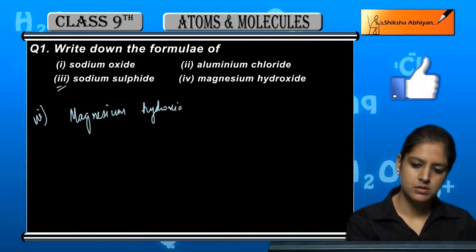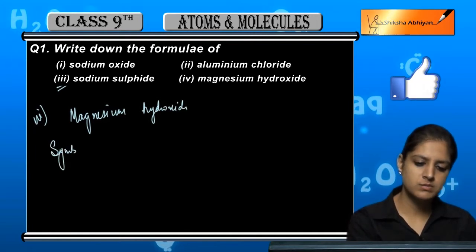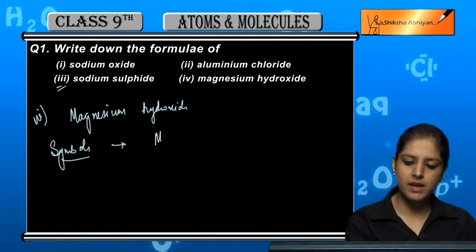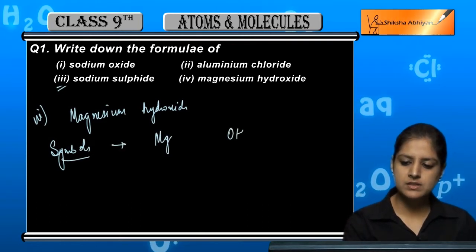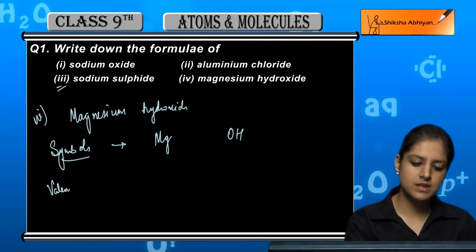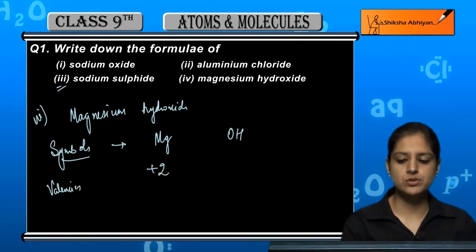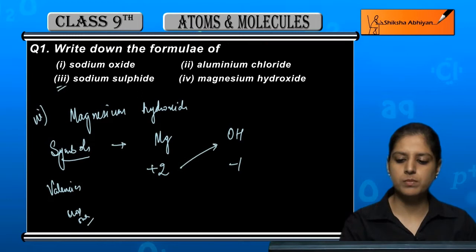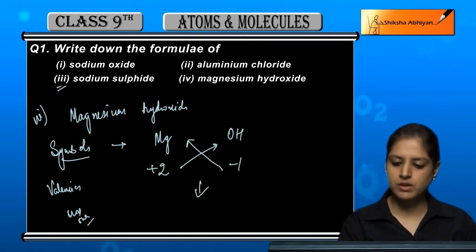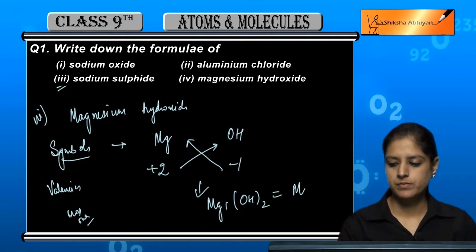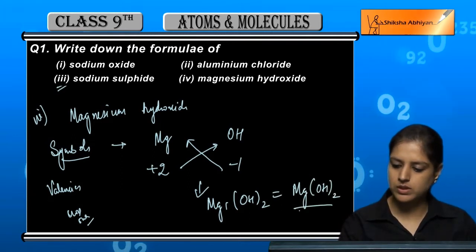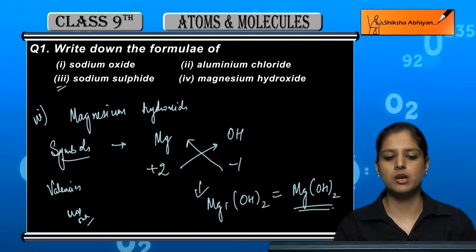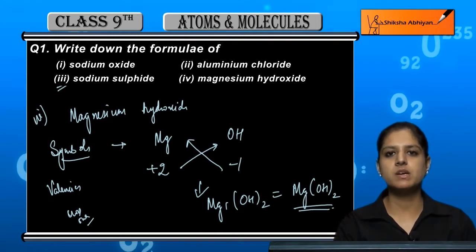Now last, magnesium hydroxide. We write the symbols, then we write the valencies. Magnesium is plus two and hydroxide is minus one. Then we cross over. Plus two goes to the hydroxide and minus one goes to magnesium. So in this way we write a chemical formula of any compound.